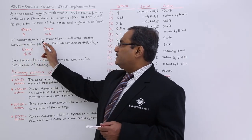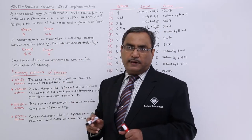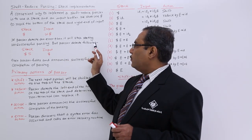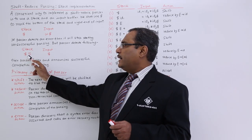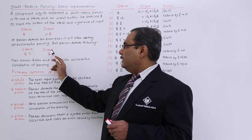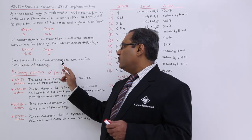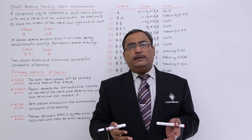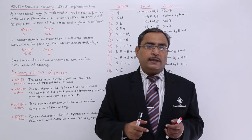If the parser detects an error, it will stop stating unsuccessful parsing. The parser announces successful completion when dollar is at the bottom of the stack, above it only the start symbol S as a non-terminal, and the input string has only dollar remaining. Then the parser halts and announces successful completion of parsing. Either the parser will state the input string has been accepted, or it will say a syntax error has been generated.